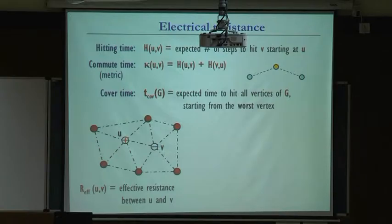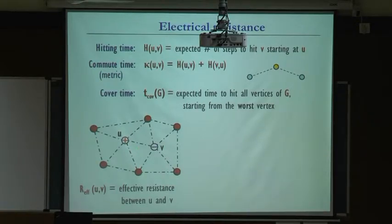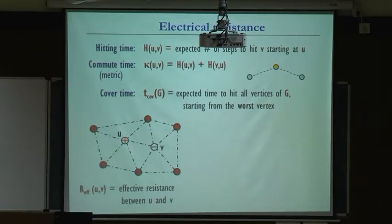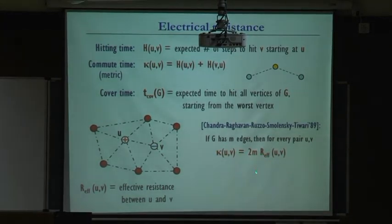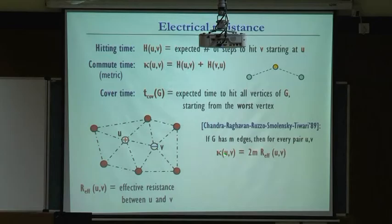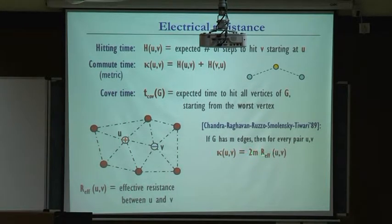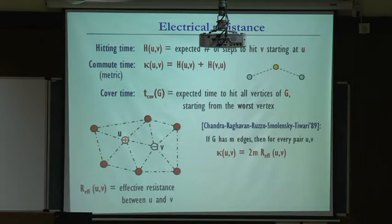A key tool in analyzing hitting times and cover times is the effective resistance between two nodes. There is a relation between commute times and effective resistances: in any graph, the commute time between u and v is twice the number of edges times the effective resistance between u and v. In particular, the effective resistance defines a metric.